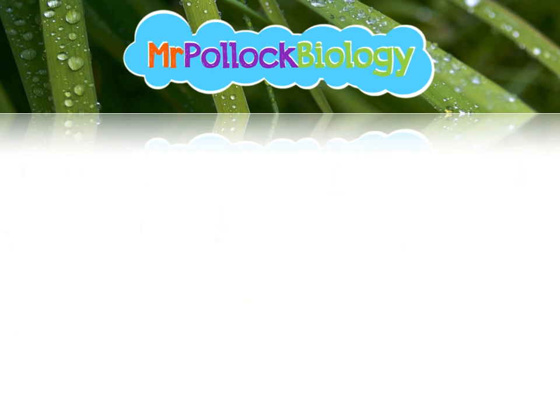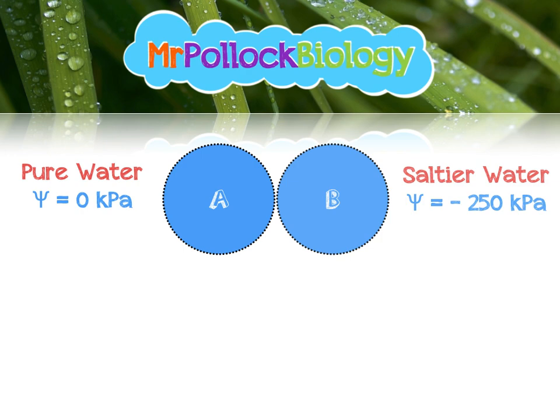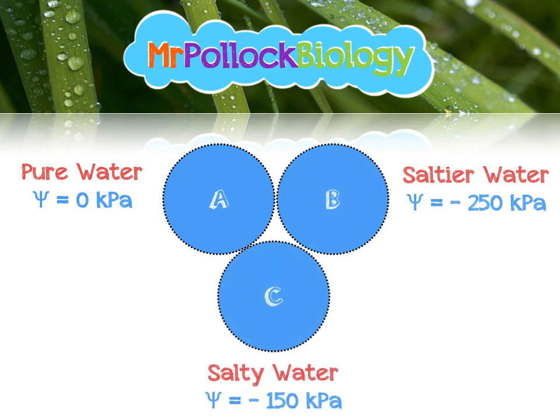Let's imagine we place a couple of cells with different water potentials next to each other. We've got pure water, saltier water, and salty water from the previous example. How will the water move? Remember it moves from less negative to more negative water potential. So water moves from A to B because minus 250 is more negative than zero, from A to C because minus 150 is more negative than zero, and from C to B because minus 250 is more negative than minus 150. The examiner will accept explanations in terms of higher and lower water potential, but I would recommend using more negative and less negative, because it really does clear things up.